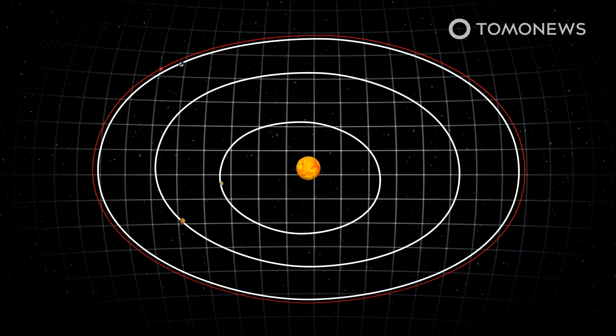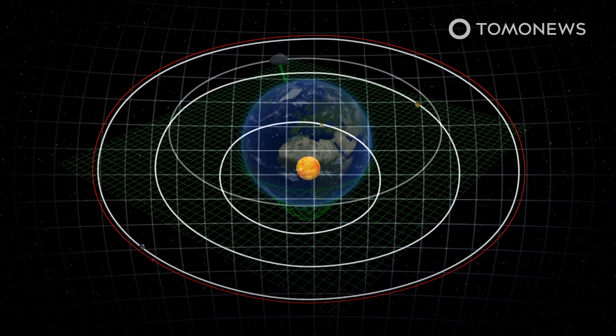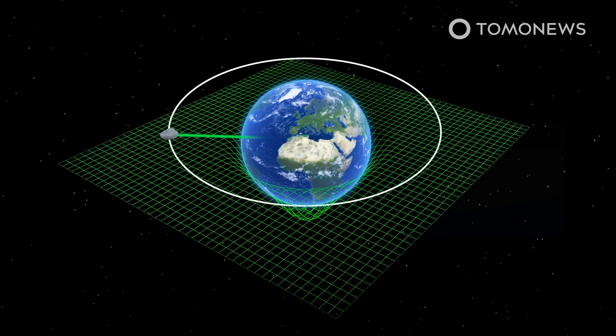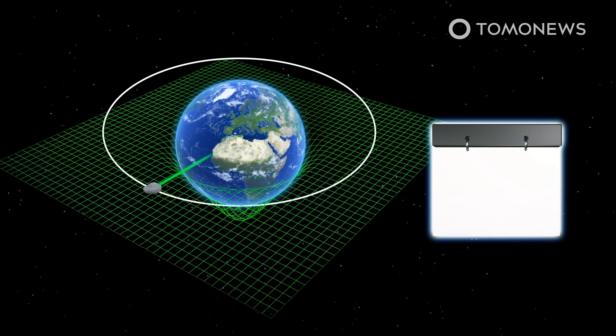It is not uncommon for Earth to capture temporary natural satellites, but most are too small to be detected. This mini-moon has been orbiting our planet for close to three years and is expected to leave in April to continue its journey around the sun.